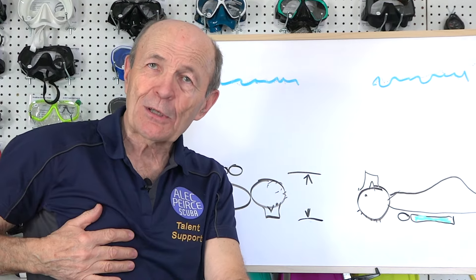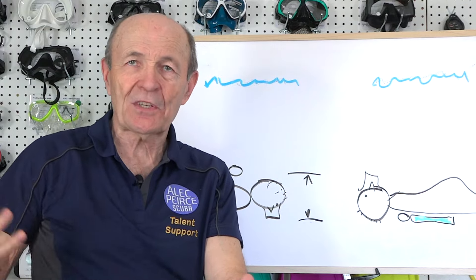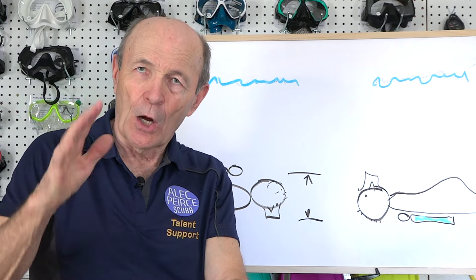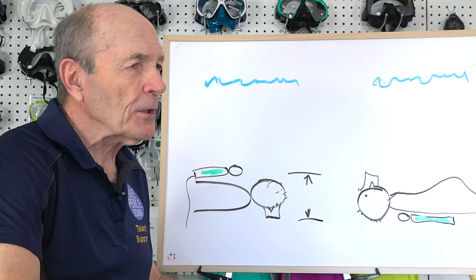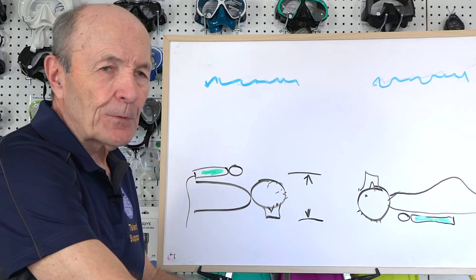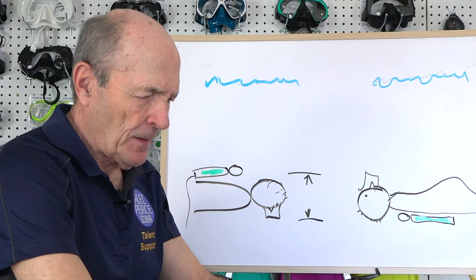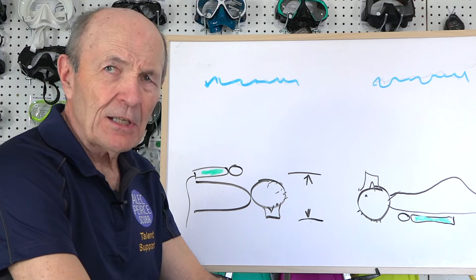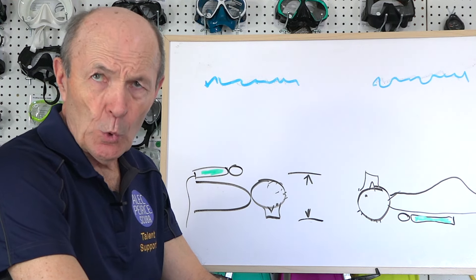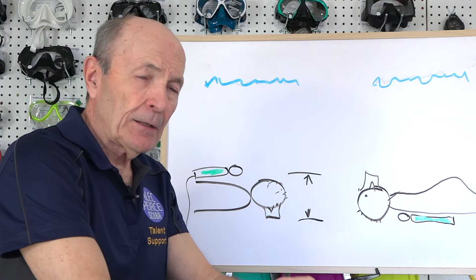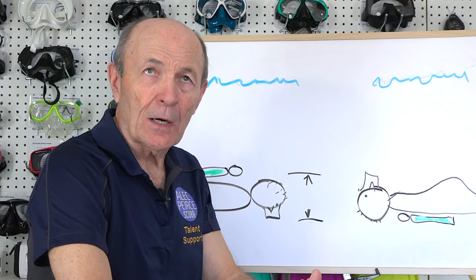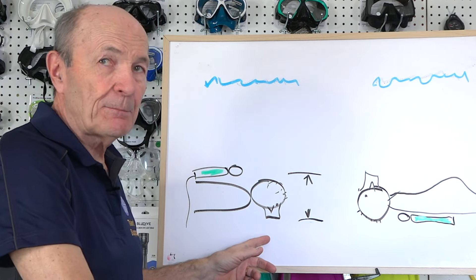Now you don't notice this, because the pressure in your lungs has also increased. It feels exactly the same. Exactly right. And on it goes, you see. So the water pressure acting on the first stage of the regulator increases the intermediate pressure coming to you by the depth of the water, the pressure of the water.